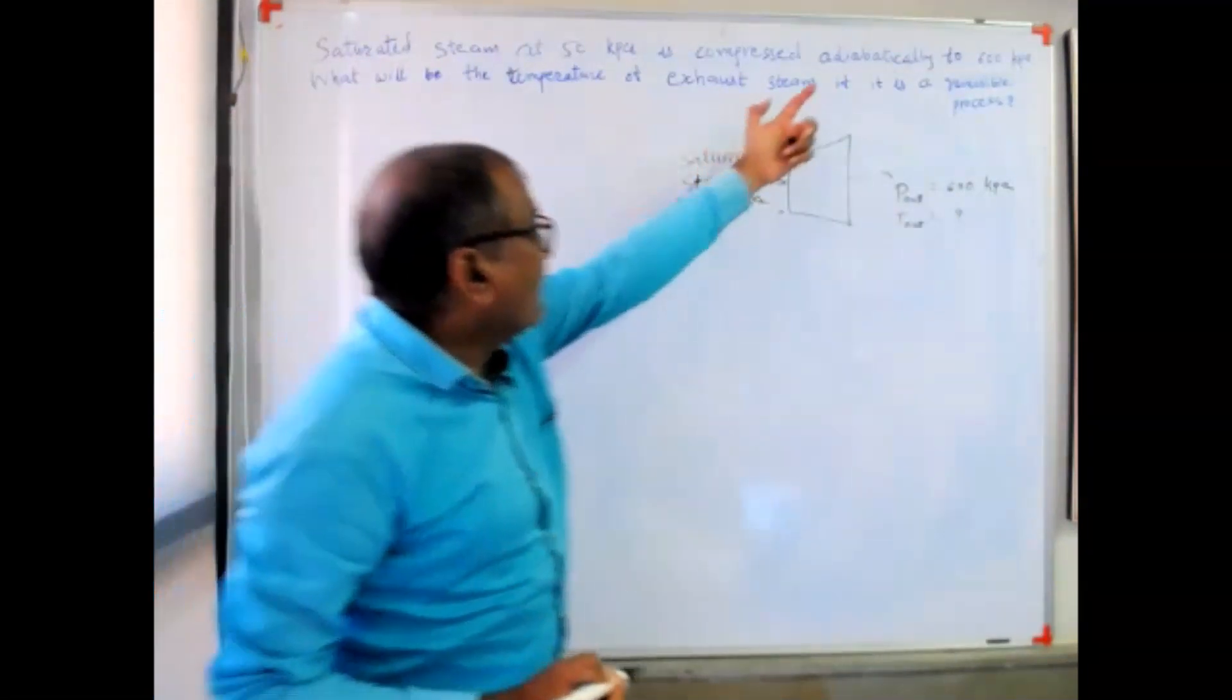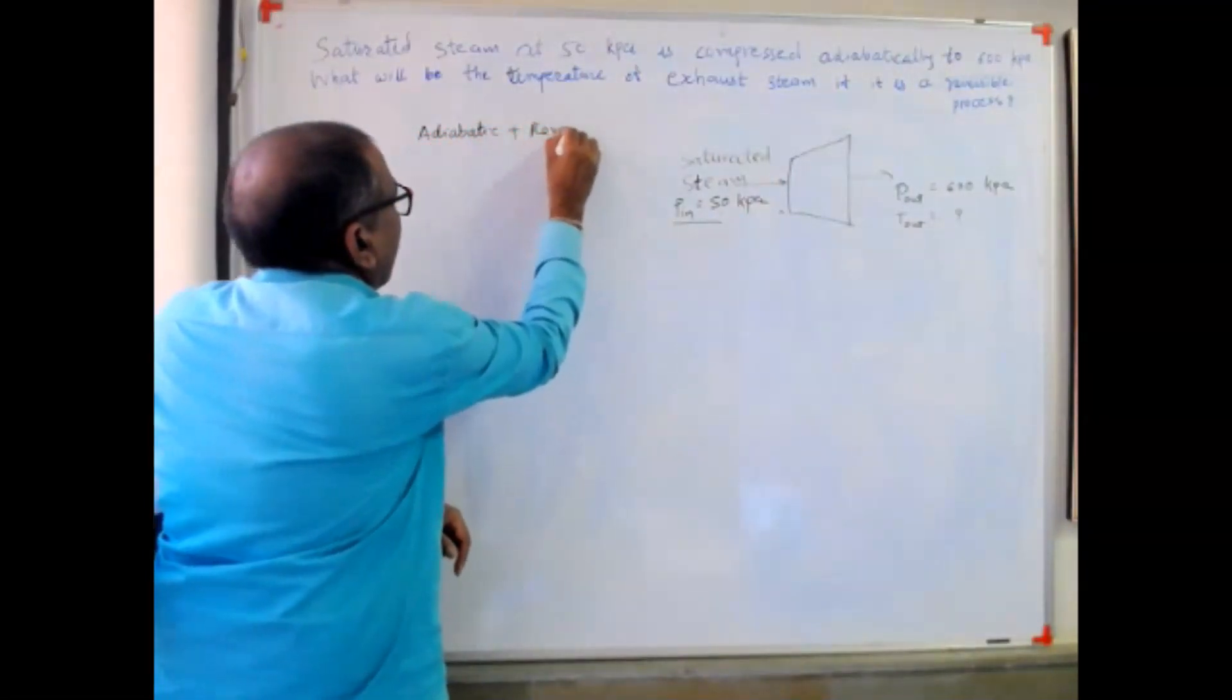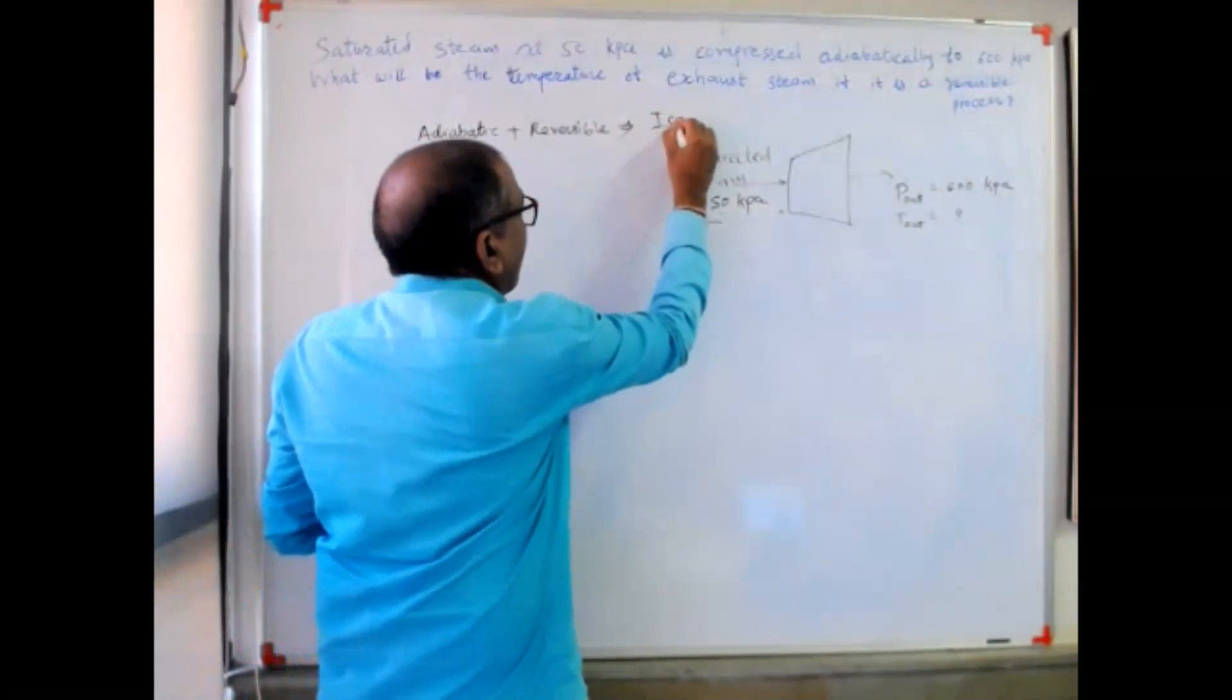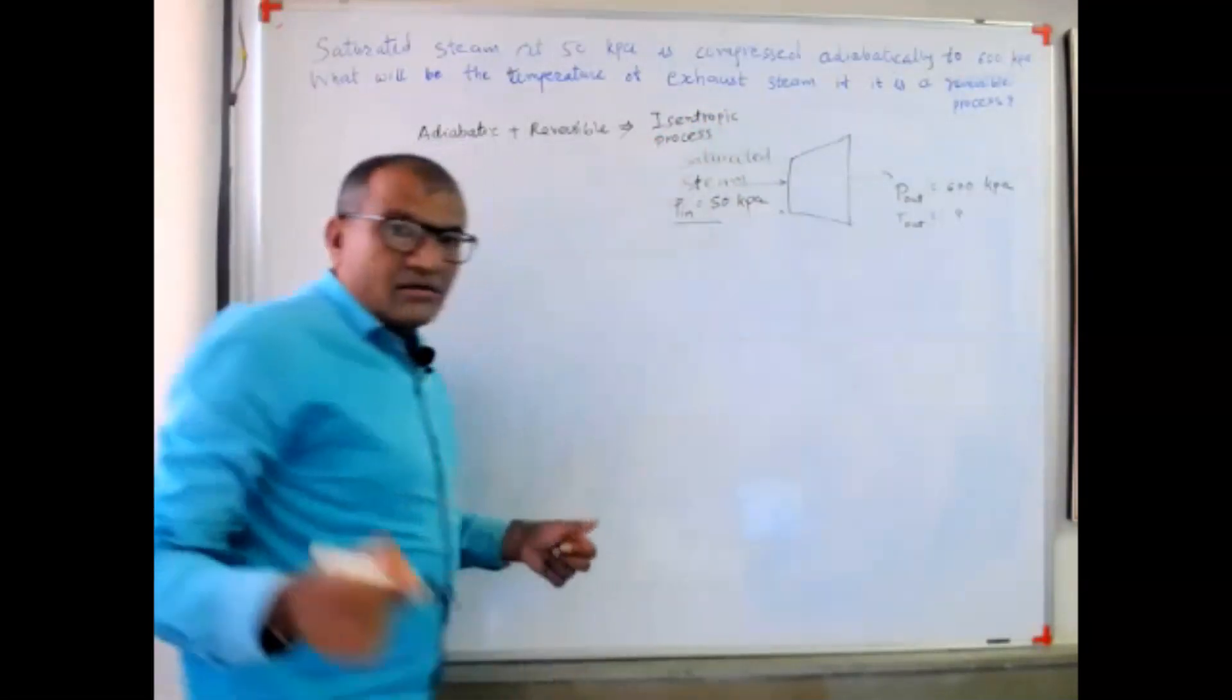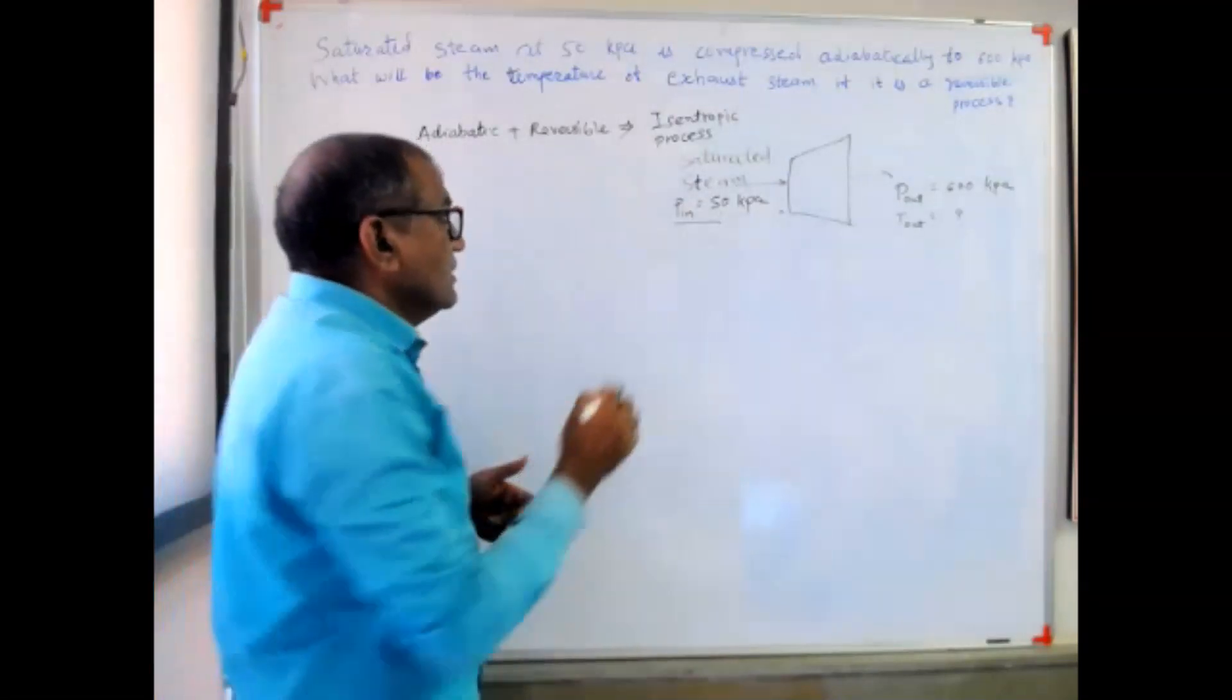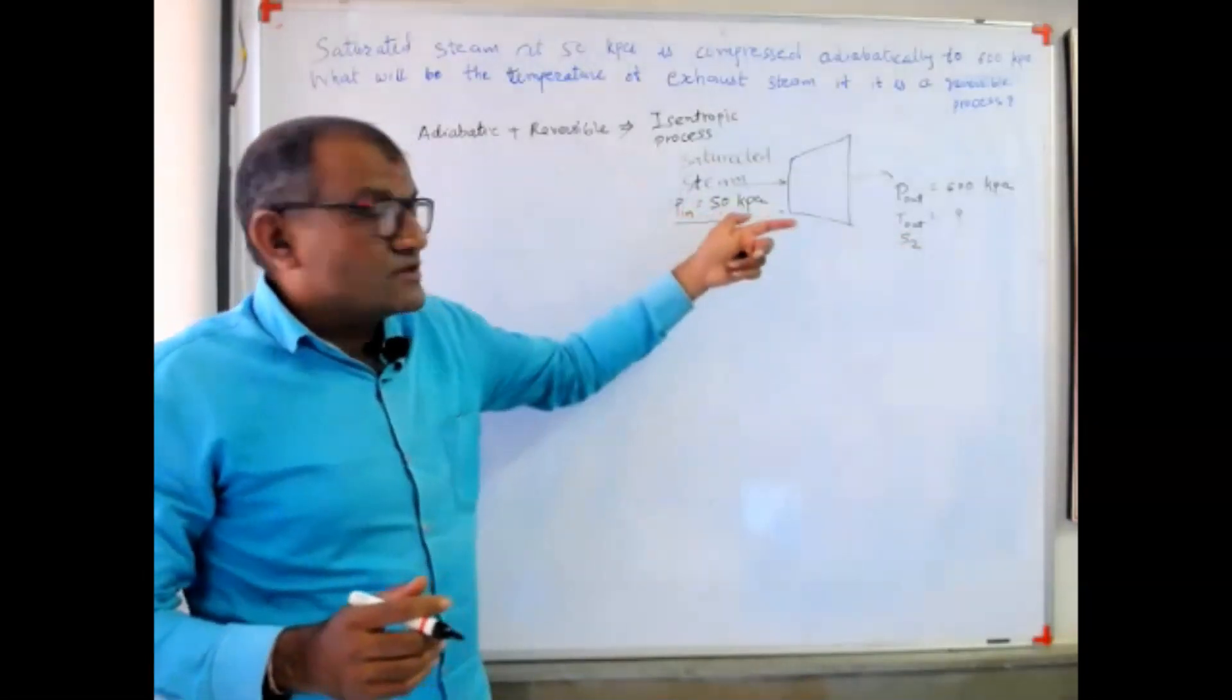We know adiabatic plus reversible - that thermal process is known as isentropic process. Isentropic process means the entropy is constant. The entropy is not going to change. So I can write here S1 and S2 both will be same for inlet steam as well as for outlet steam.